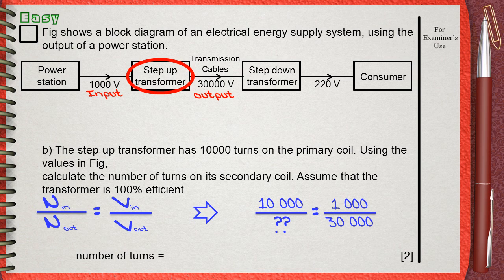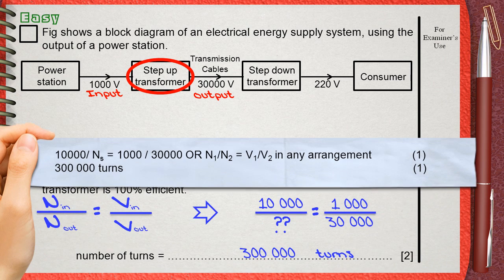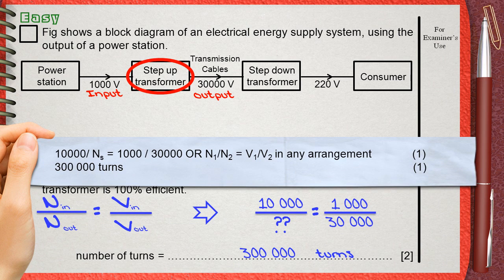This means that the number of turnings on the secondary coil will be 300,000 turns. The mark scheme gives one mark for the rule and the substitution and the second mark for the final answer, 300,000 turns.